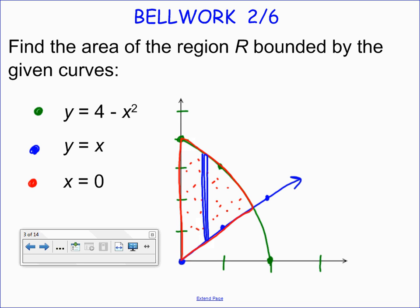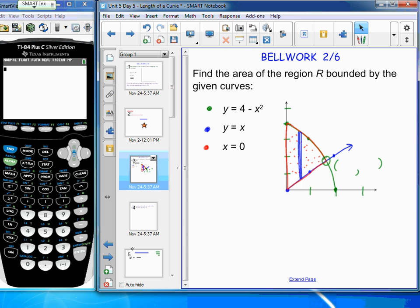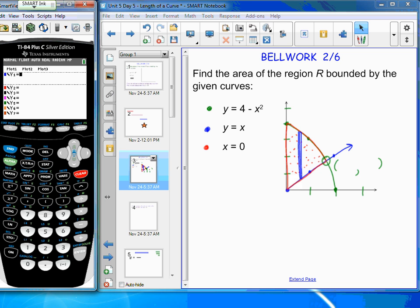We need to find this point of intersection so I can get the limits on my definite integral, and so I'll go ahead and use my graphing calculator now to get the coordinates of that point. I'm going to do 4 minus x squared, and I'm going to do y equals x, and I'm going to make my window match as best as I can. So I'll go negative 1 to 3, and negative 1 to 5.